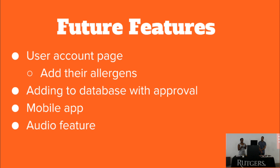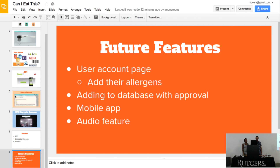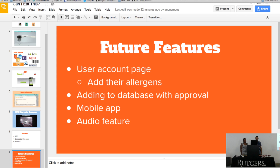For future features, we'd want users to store their allergens so whenever they search, it pops up saying 'This has peanuts in it, you can't eat it' rather than having to read through the results. We also want to add the ability to submit products that aren't in the database for approval. A mobile app would be ideal — right now if you go to our site on mobile it may crash. We'd also like to add an audio feature for children: if they scan it, it would say 'No, you can't eat this.'